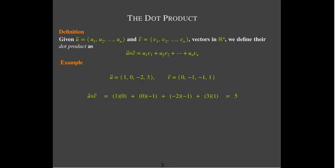So let's just look at an example. I have two vectors, u and v, from four-space, and I'm going to form their dot product. I'll start with the product of the first components, then the product of the second components, then the third and fourth components. Then I'm going to add those products up and I get an answer of five.